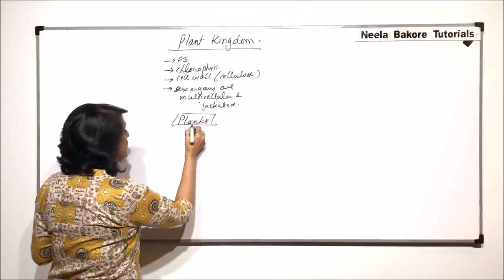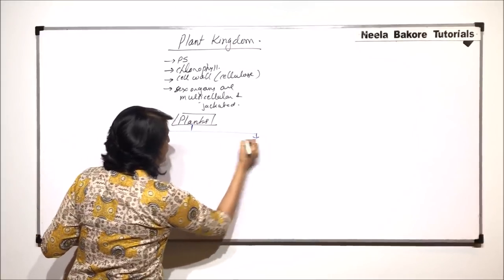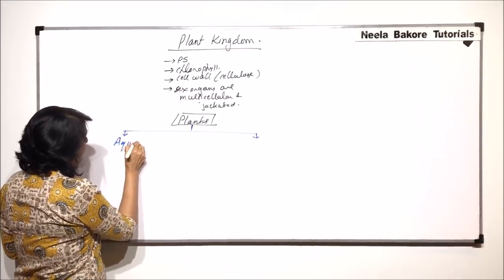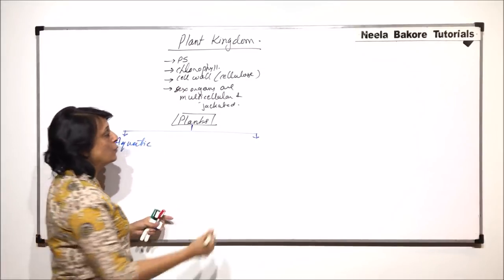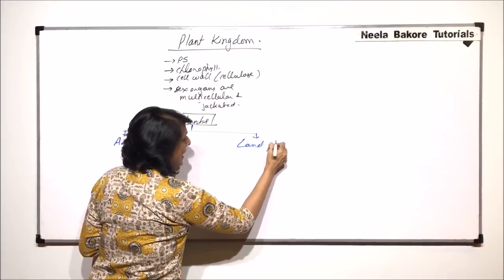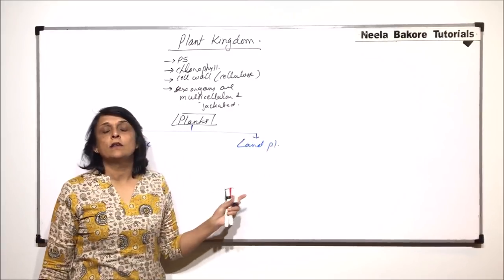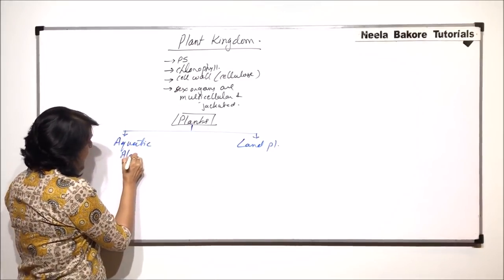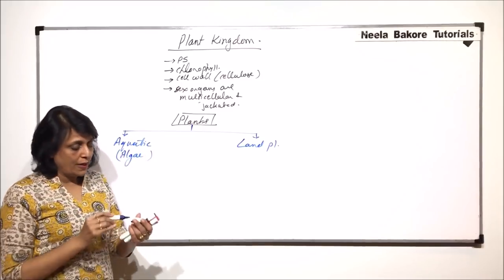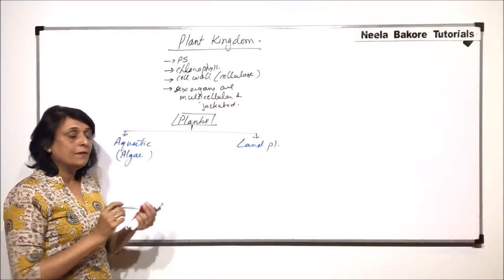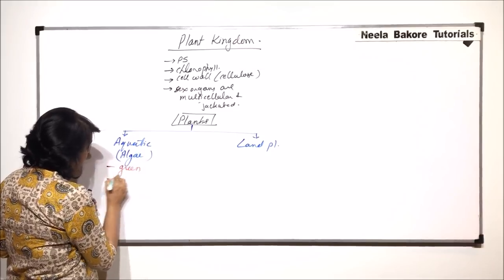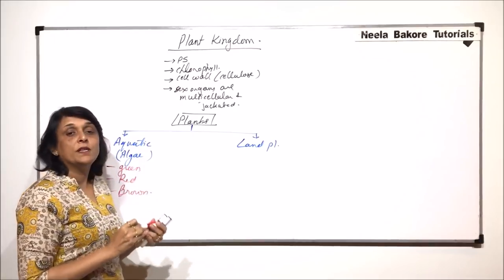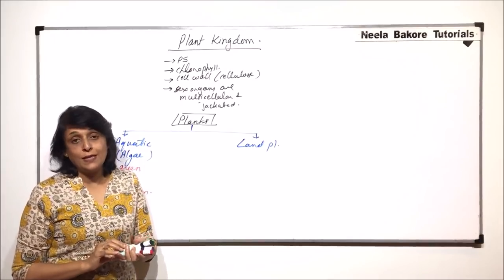This first classification is based on where these plants are found. If they are found in water we call them aquatic plants, and the ones on land are called land plants. Under aquatic plants, algae are normally included, and we would be talking about green algae, red algae, and brown algae — these three types.